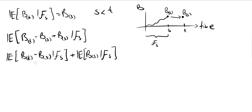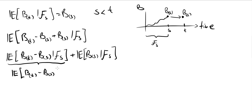Because this is a Brownian motion, the increments are independent of the filtration, which means the first part is independent of F_S — so we can write it without the conditioning. For the second term, B_S given that we know all information until time S is just a constant, because the filtration tells us the value of the Brownian motion at time S exactly.